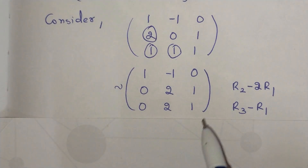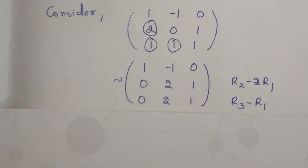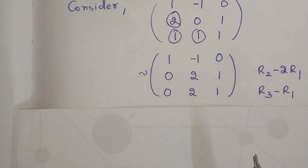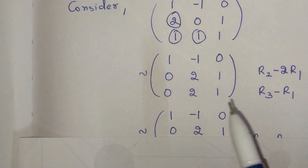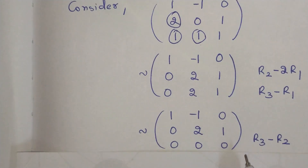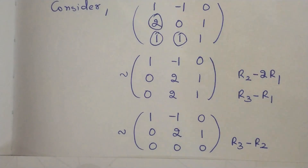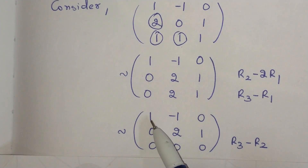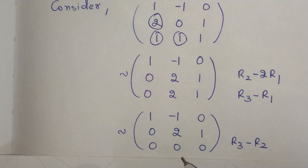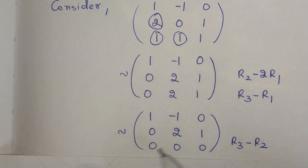We observe that the second row and third row are now the same after those operations. So we keep row 1 and row 2 as they are, and apply R3 → R3 − R2, making the entire third row zero. The leading entry in row 1 is 1, with zeros below it; row 2 has 0 in the first column. This is the row reduced echelon form.